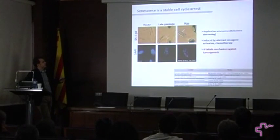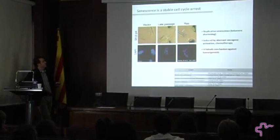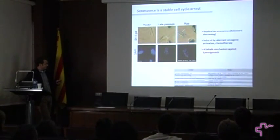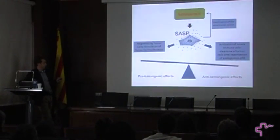Senescent cells show a very typical morphology — a so-called fried egg morphology. They also show particular changes in their chromatin structure. These features have been described extensively.